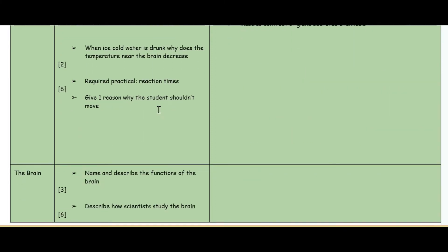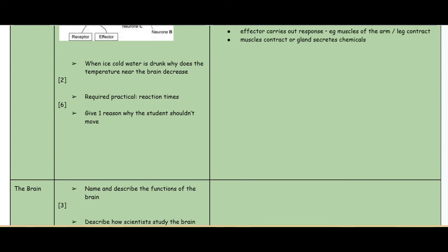Moving on to the next question: when ice cold water is drunk, why does the temperature near the brain decrease? The reason is because the blood is cooled at the stomach and this cooled blood flows all the way around the brain.